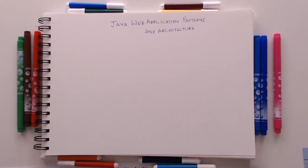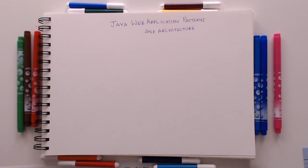Welcome back. In the last video we talked at a high level about the generic architecture evolution over the last few years — starting with web applications, then web services (SOAP and REST), then micro services, Docker, and Kubernetes. Starting this video, let's deep dive into each of these individual worlds, beginning with patterns and architectures used for developing web applications a decade back.